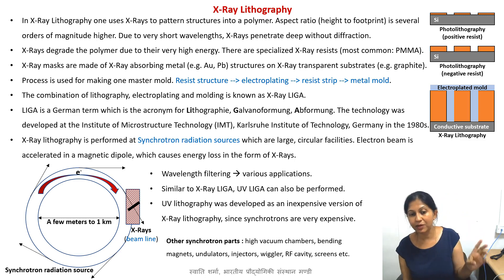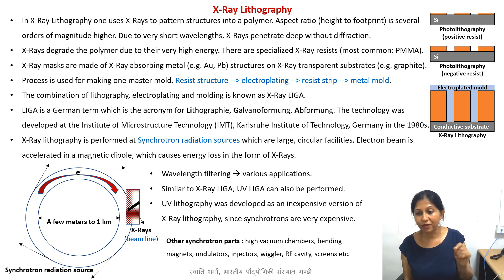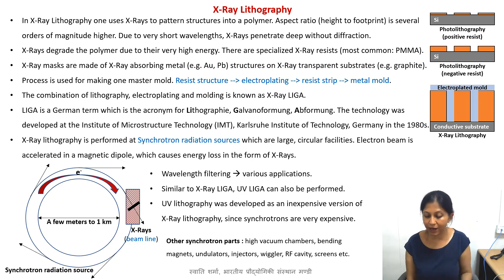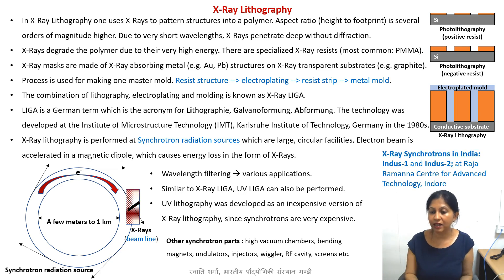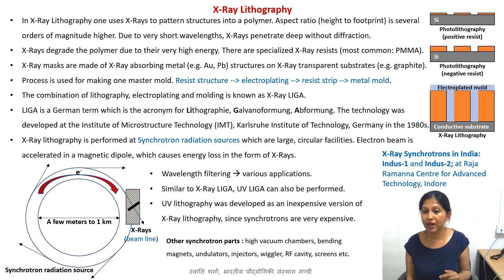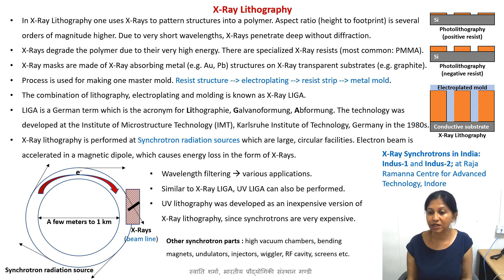That is in fact the reason UV lithography was developed after x-ray lithography. Because x-ray lithography was so expensive, UV lithography was afterwards developed — it was in the beginning called 'poor man's x-ray lithography.' One important thing: x-ray synchrotron facilities are very expensive and there are very few facilities all over the world. In India we have two x-ray synchrotrons known as Indus-1 and Indus-2, and both are located at Raja Ramanna Centre for Advanced Technology, Indore. If you get a chance, you can go there and perform some x-ray LIGA.